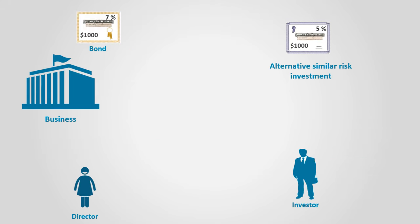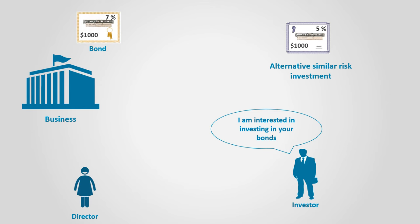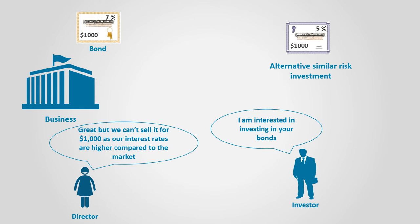Now let's assume that the bond offers an interest of 7% while the investment of similar risk in the market is 5%. A rational investor would certainly choose to invest in the bond. However, the business managers are also rational, so they won't sell the bond for $1,000 and pay 7% interest while they know that the market rate is 5%.